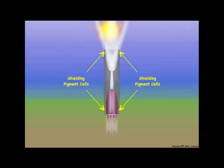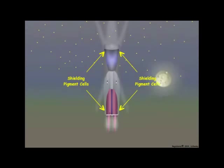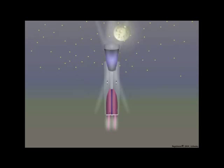However, as night approaches and the intensity of light decreases, the shielding pigments of scotopic ommatidia contract upward toward the distal end of the secondary pigment cells. Distal contraction of the shielding pigments opens the basal portion of the pigment cells so that light entering the dioptric apparatus of one ommatidium can pass through and strike the rhabdoms in adjacent ommatidia.